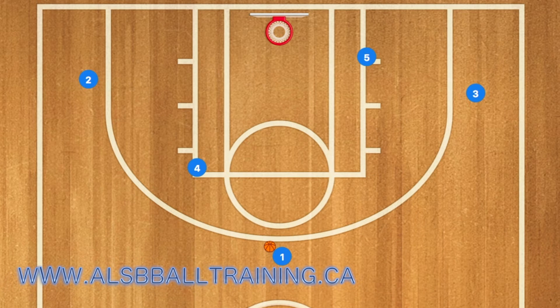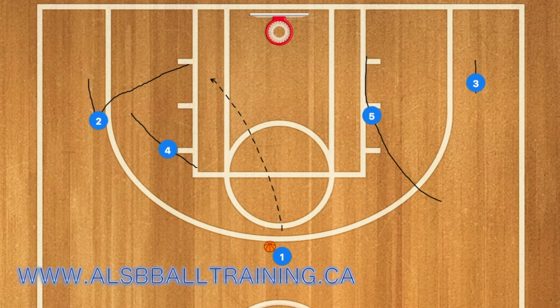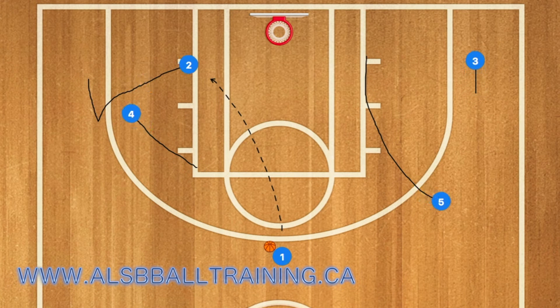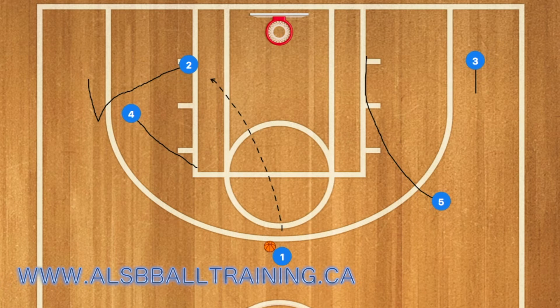Hello basketball coaches. First in this basketball play, four is going to set a screen for player two and he's going to cut to the rim. He may be open for a pass. And five will then pop out to the three-point line.